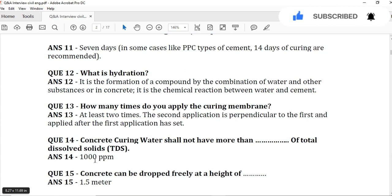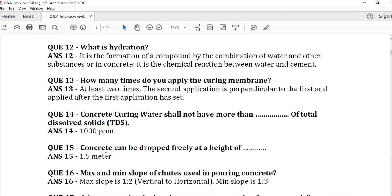The last question, question number 15: Concrete can be dropped freely at height. Maximum height for the concrete drop is 1.5 meters. But here in Saudi Arabia, in our project, it is 1 meter. To avoid segregation, you have to drop the concrete from 1 meter, but maximum you can go to 1.5 meters.